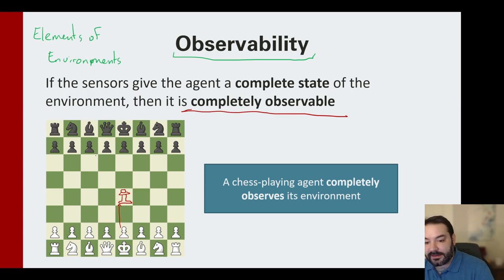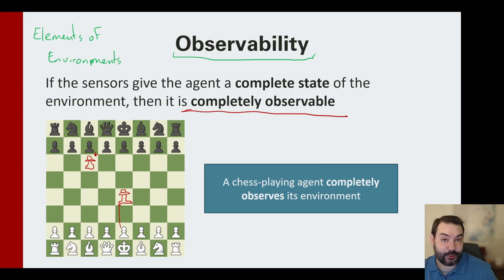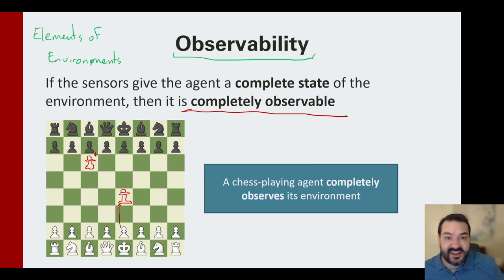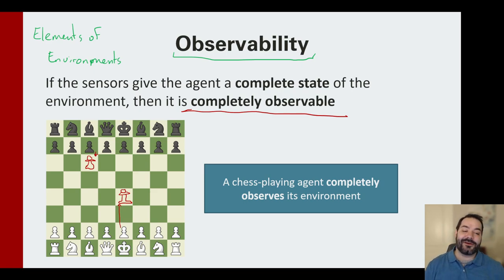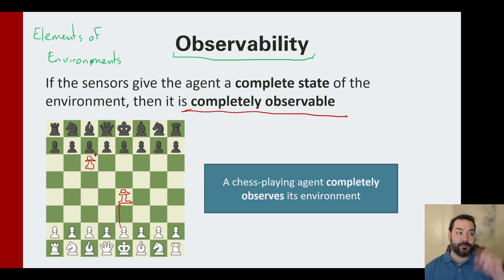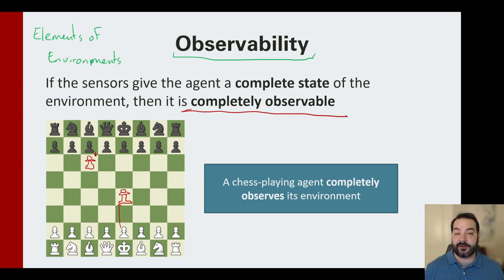I can map that out: black moves left bishop pawn one space. Every single one of these actions could be mapped out into a tree-like form, and we could search that tree.